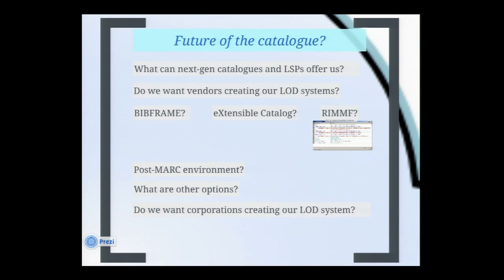As a quick example, this is the author-work element from the element set RDA Roles. From what I've seen, at least one next-generation catalog can provide drop-down lists for authorized access points, but I don't know if those connect to URIs in the background — I suspect they don't. Except for putting all library technical services together in one package and moving to the cloud, these systems are still based on that flat MARC record, and none of the other data is linked. Do we even want vendors creating our linked open data systems, or is this something we'd like to control ourselves?